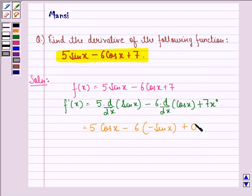Plus this will be 0 because d by dx of x raised to power 0 will be 0 into x raised to power 0 minus 1. So this becomes 0.